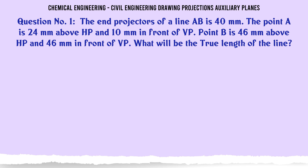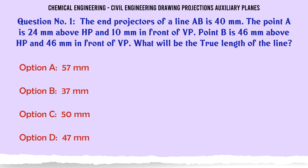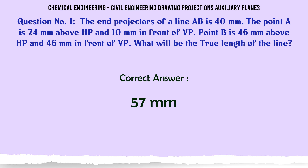The end projectors of a line AB is 40 mm. Point A is 24 mm above HP and 10 mm in front of VP. Point B is 46 mm above HP and 46 mm in front of VP. What will be the true length of the line? A) 57 mm, B) 37 mm, C) 50 mm, D) 47 mm. The correct answer is 57 mm.